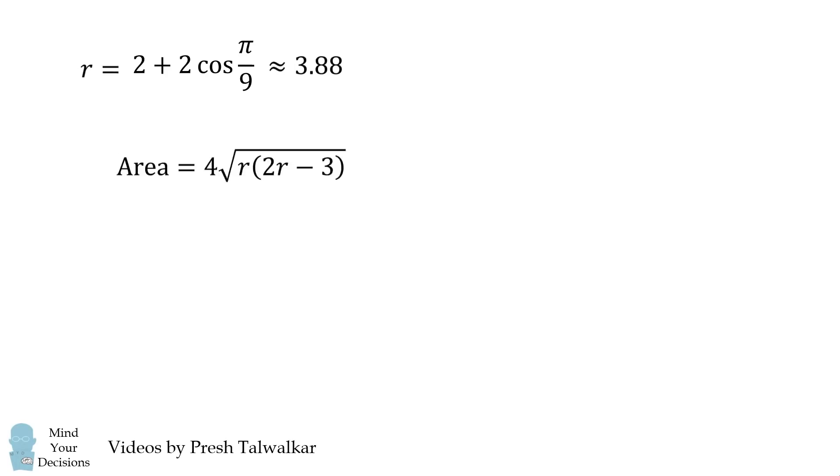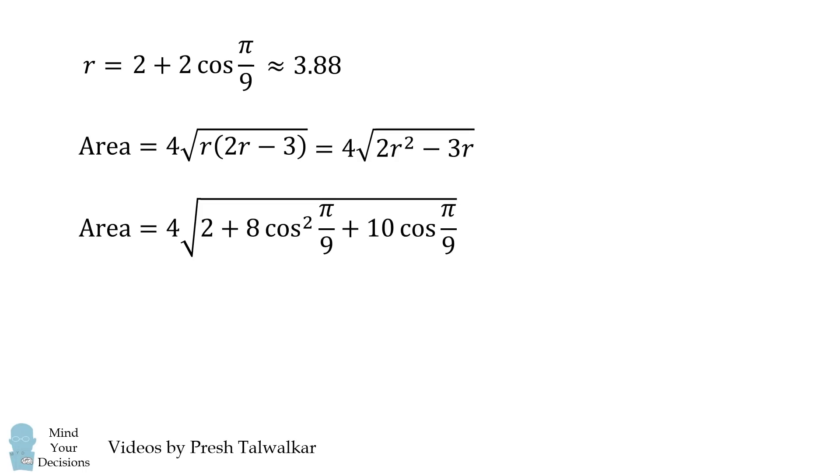We are thus left with a single value for R, and that's the value we want. We substitute that into our area expression and we get the following. It's an exact value for the area in terms of the cosine of pi over 9. I think this is a really incredible formula, and it's approximately equal to 17.19.